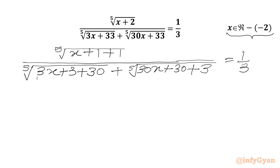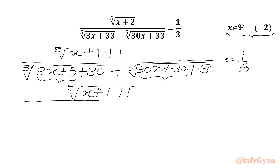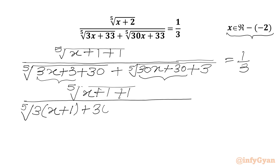Now I will take 3 common from the first denominator term and 30 common from the second. So we write 5th root of (x+1)+1 over: 5th root of 3 times (x+1) plus 30, plus 5th root of 30 times (x+1) plus 3, equal to one third.